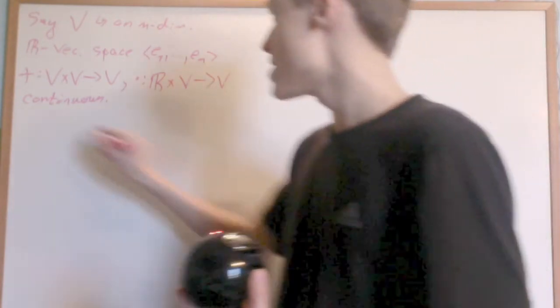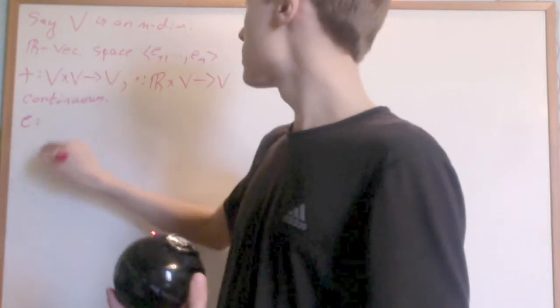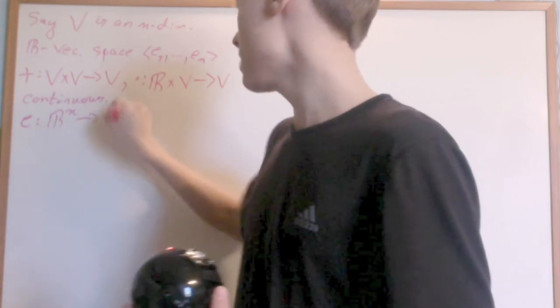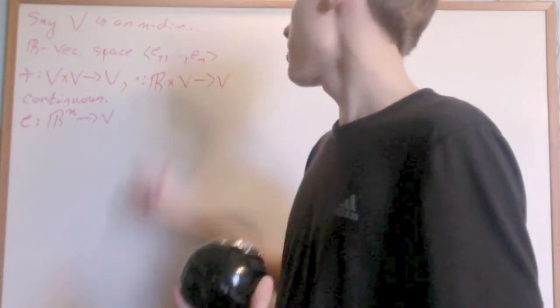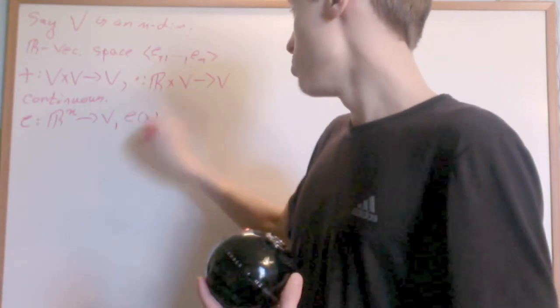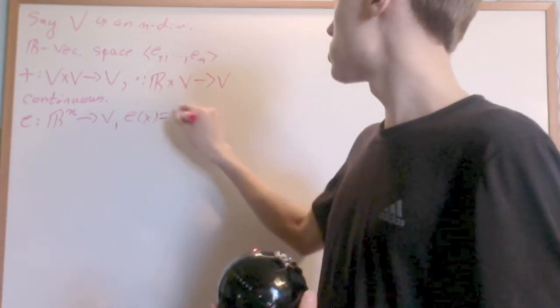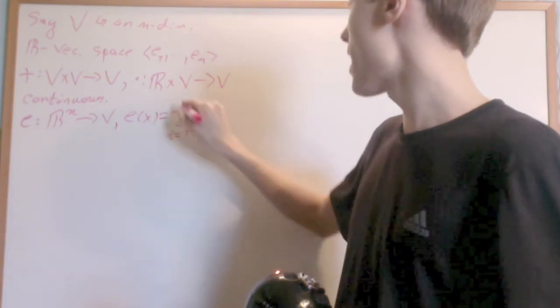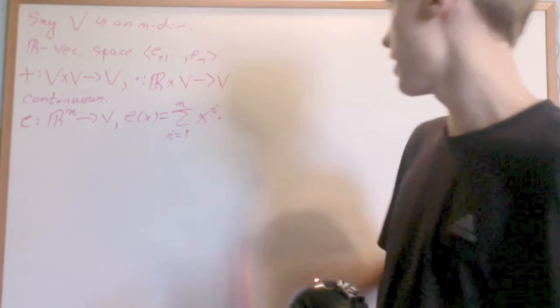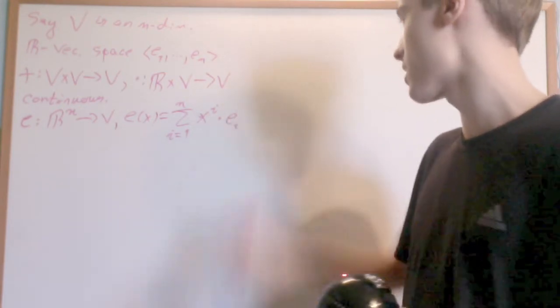Now let's look at the map E that brings you from Rn into V. This map will rely on this basis because we define E of X as the sum from i equals one to n of Xi, the ith coordinate of X, times Ei, the ith basis vector.